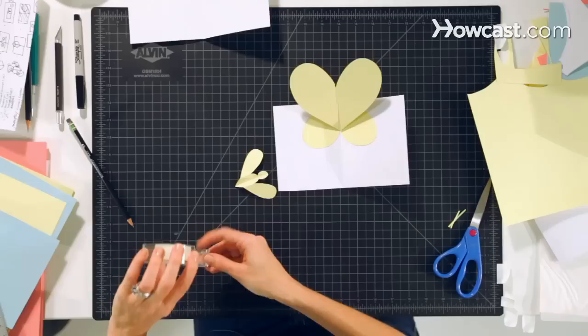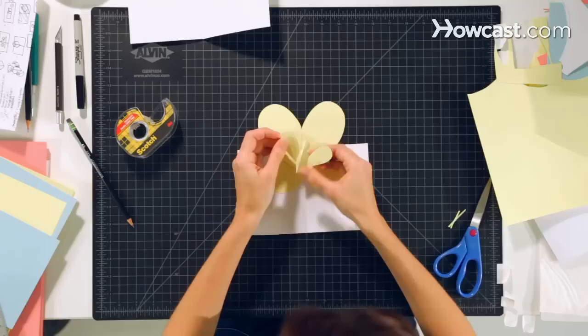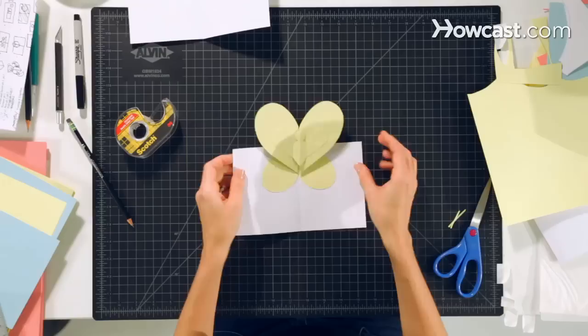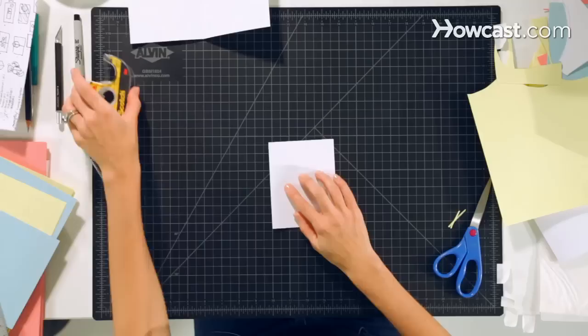And we're going to put a little bit of double stick on either side of his wings. And we're going to line him up with his center line and the center line of the wings and the base page. Crease them down. Fold it shut.